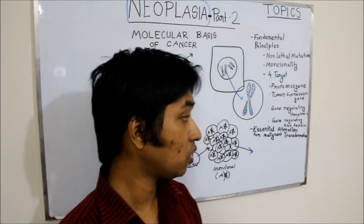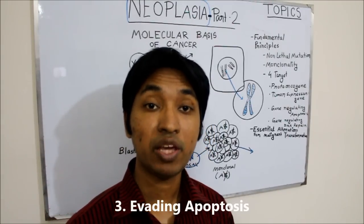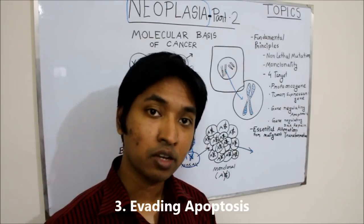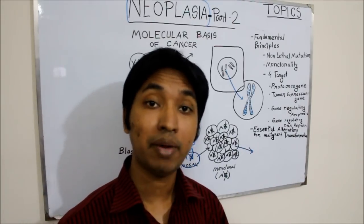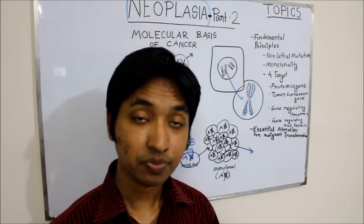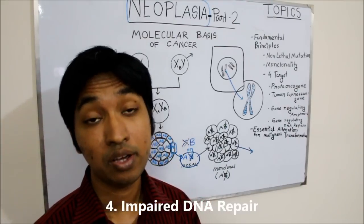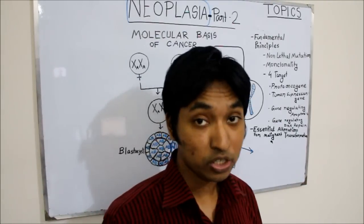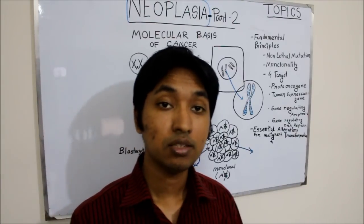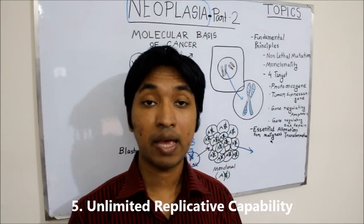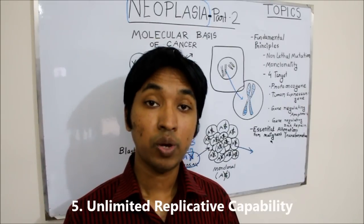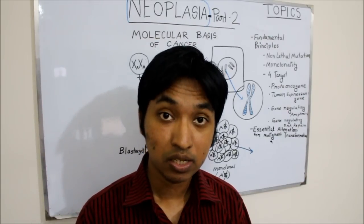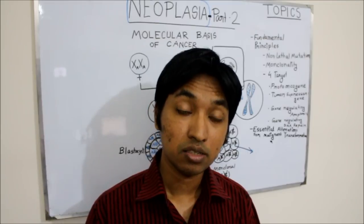The third essential alteration is evasion of apoptosis or escape from apoptosis, which we have already discussed. The fourth essential alteration for malignant transformation is impaired DNA repair, which we have also discussed. The fifth essential alteration is unlimited replicative capability — when a cell gets unlimited replicative capability, it can become a malignant cell in the long run.